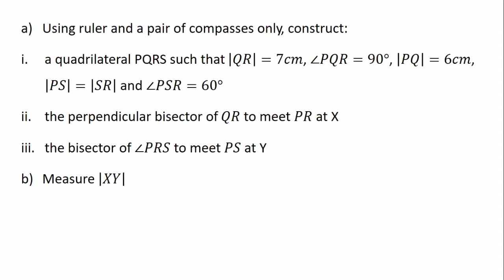The question is: using a ruler and a pair of compasses only, construct a quadrilateral PQRS such that the length of the side QR is equal to seven centimeters, the angle PQR is equal to 90 degrees, the length of the side PQ is equal to six centimeters, and the length of the side PS is equal to the length of the side SR.